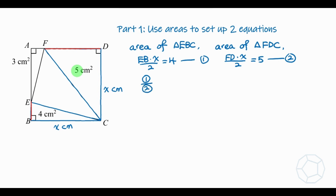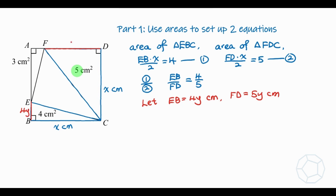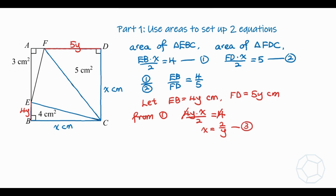Next, from the area of triangle FDC: FD × x / 2 = 5, which is equation two. Dividing equation one by equation two to eliminate x, we obtain EB / FD = 4/5. So we let EB = 4y cm and FD = 5y cm. Substituting EB = 4y into equation one and simplifying, we get x = 2/y. This is equation three.